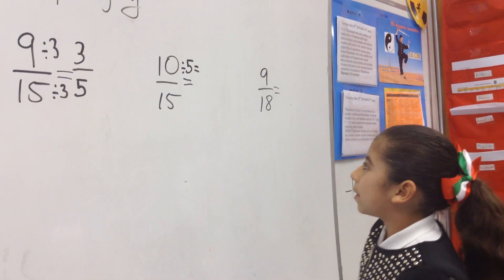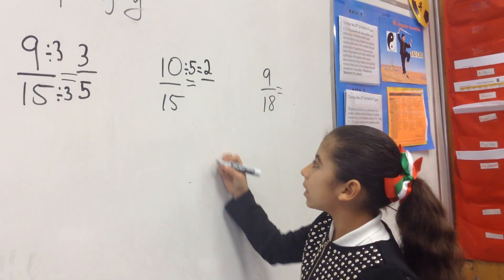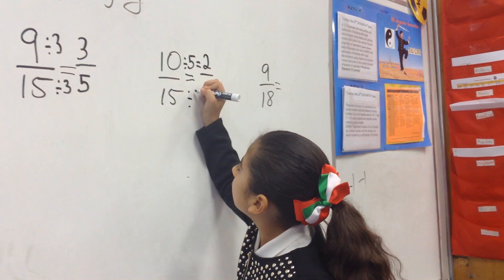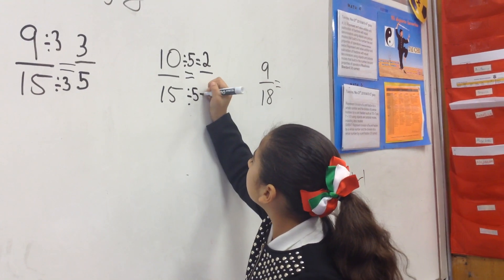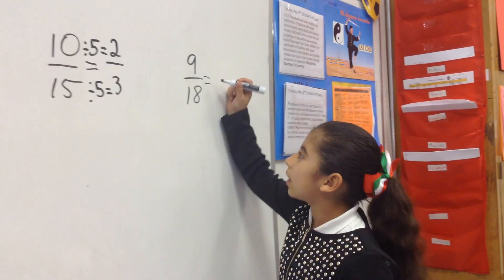10 divided by 5 equals 2. Then 15 divided by 5 equals 3. Then 9...